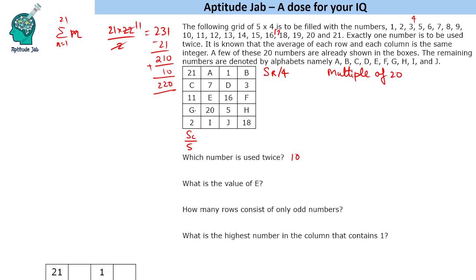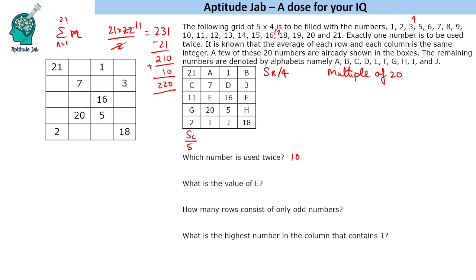Now let us fill the values. Each row will have a sum of 44 because there are 5 rows. Each column will add up to 55. Let us fill this value which is already given here.